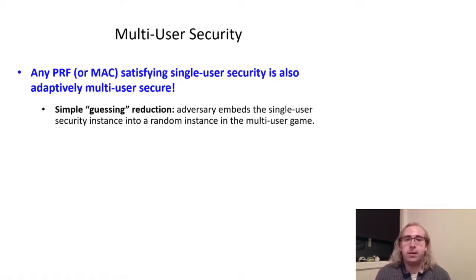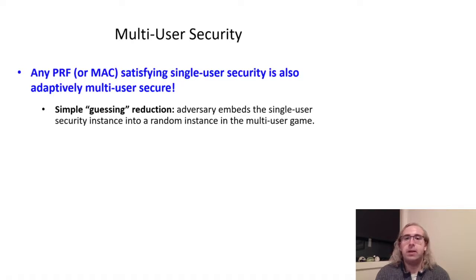This can be seen through a very simple reduction, where an adversary against single-user security embeds their challenges into a randomly selected one of the L of N instances in a multi-user security game. That way, if a multi-user security adversary happens to choose the correct instance as the one to break, the single-user adversary will break security of its own instance as well. So it seems fairly straightforward to obtain adaptive multi-user security by just constructing a primitive which is classically secure, and relying on the reduction from multi-user to single-user security.